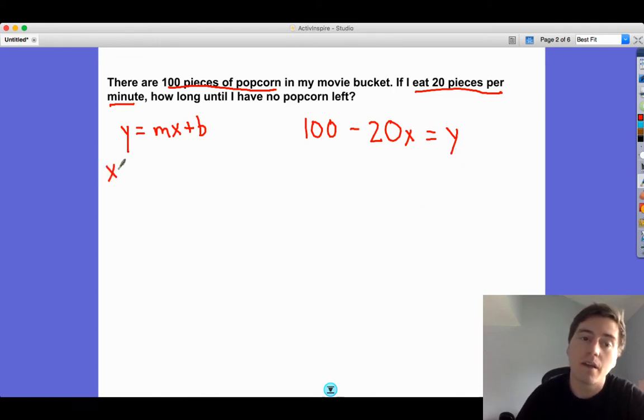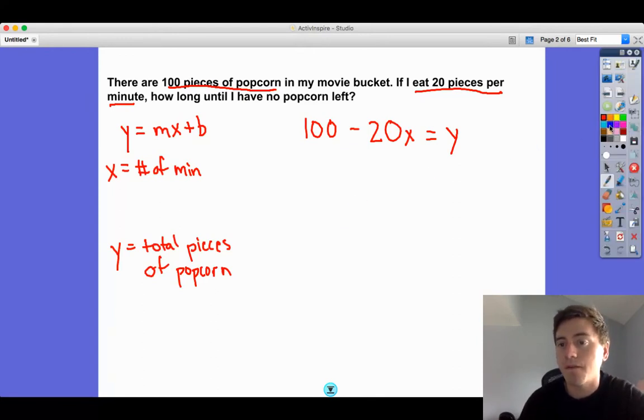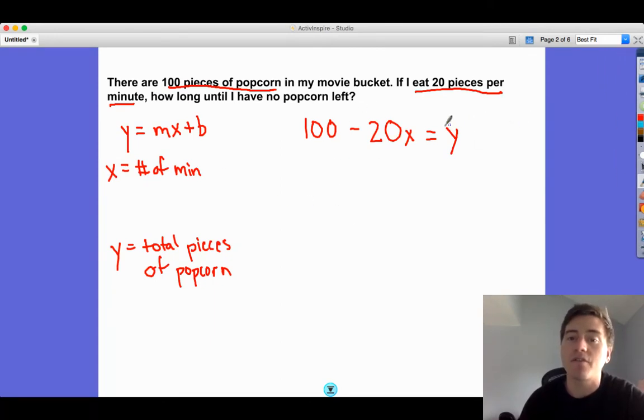Let's declare our variables. x is the number of minutes, and y is the total pieces of popcorn. If this is my equation, y equals negative 20x plus 100. How long until I have no popcorn left? It says no popcorn left, so that's total pieces of popcorn. If I have none left, it should be zero.